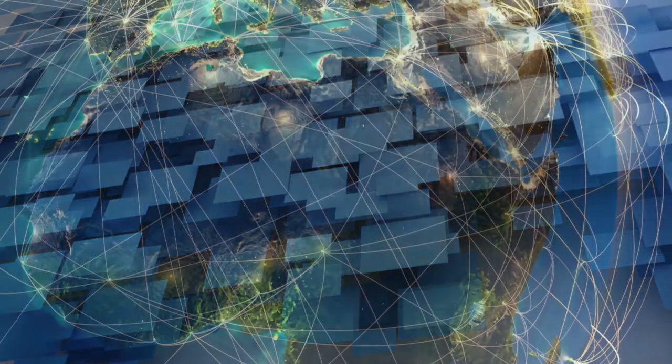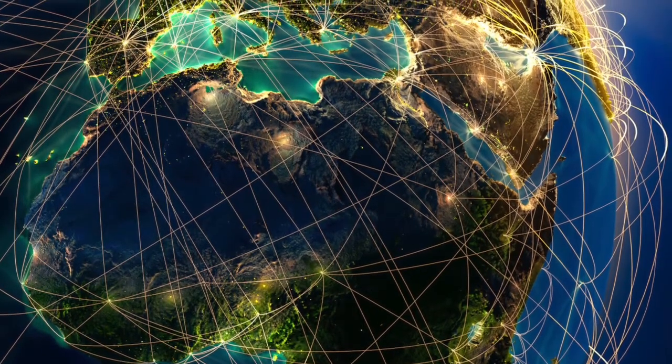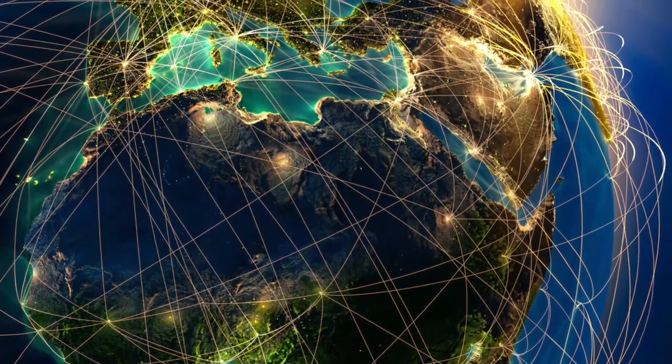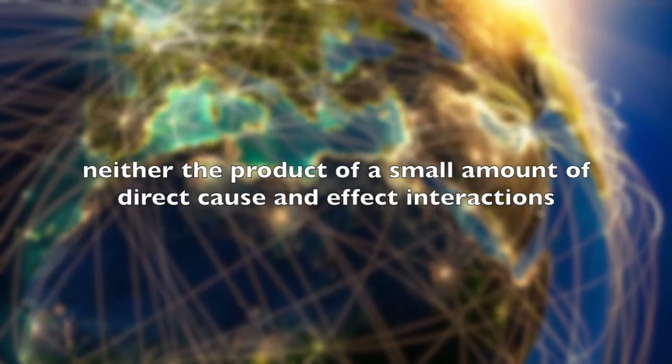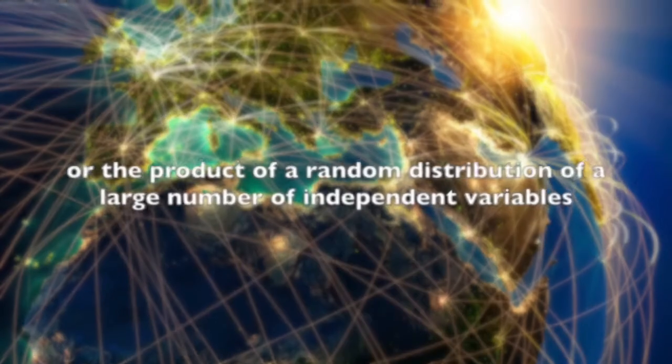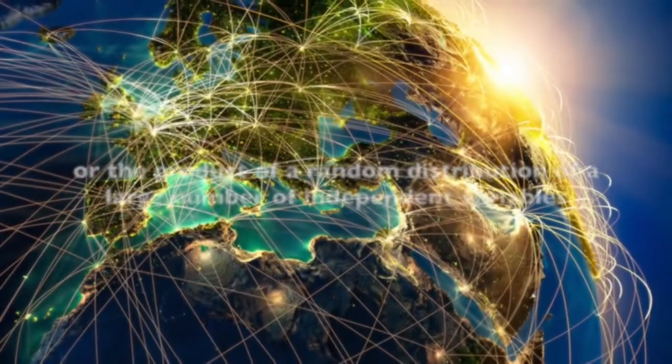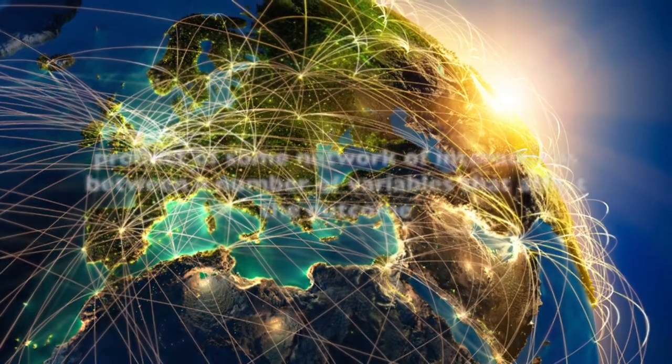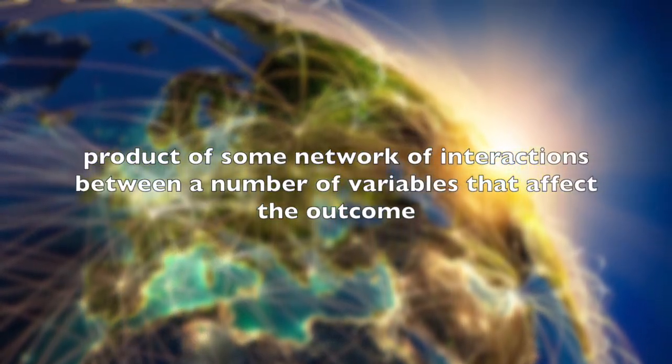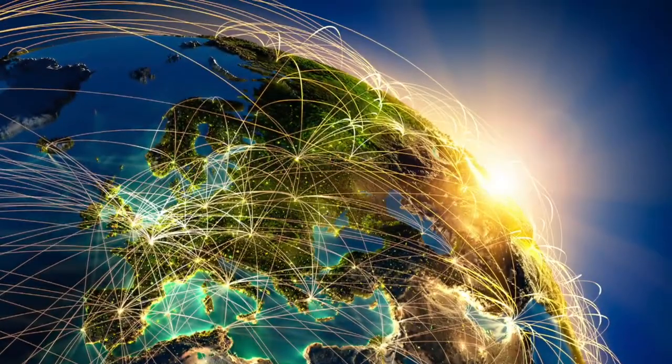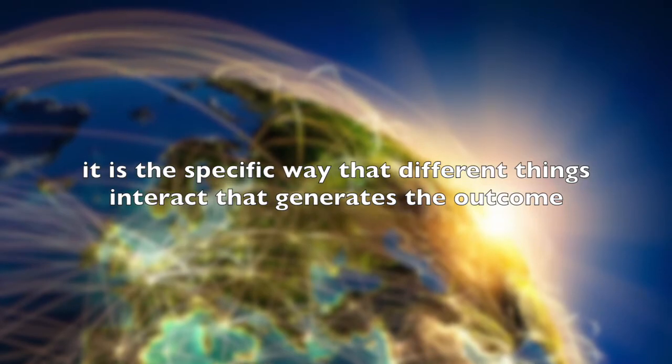However, in complex socio-political systems, the results of some macro phenomenon are typically neither of these—neither the product of a small amount of direct cause and effect interactions, nor the product of a random distribution of a large number of independent variables. They are instead the product of some network of interactions between a number of variables that affect the outcome, and it is the specific way that different things interact that generates the outcome.